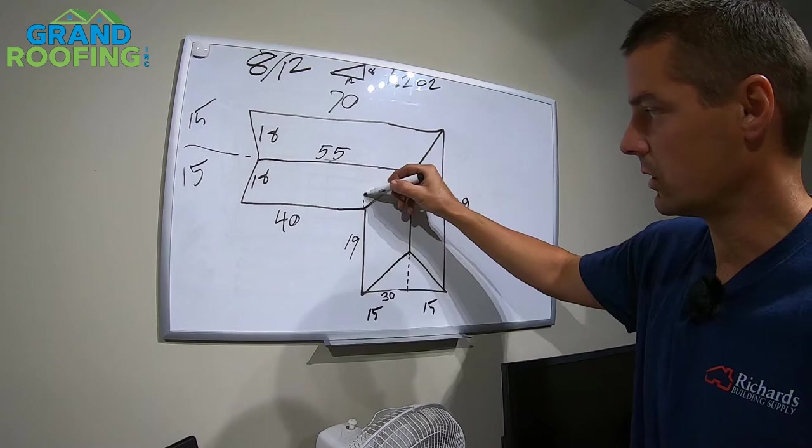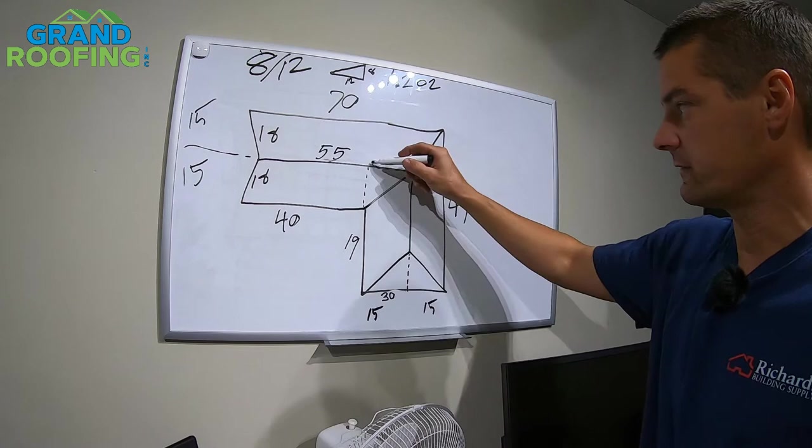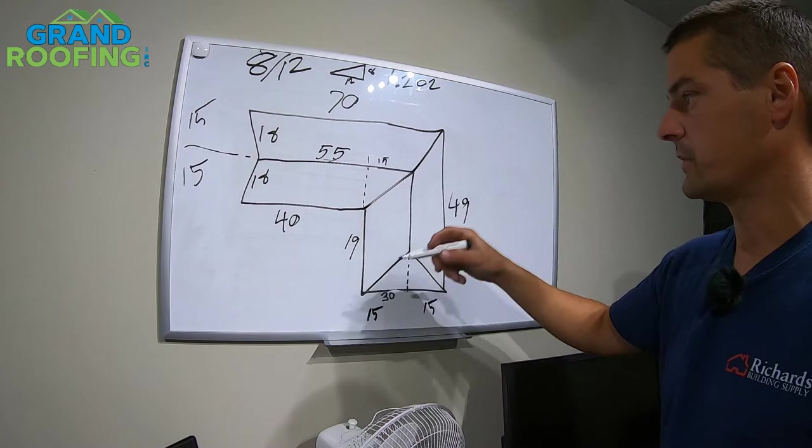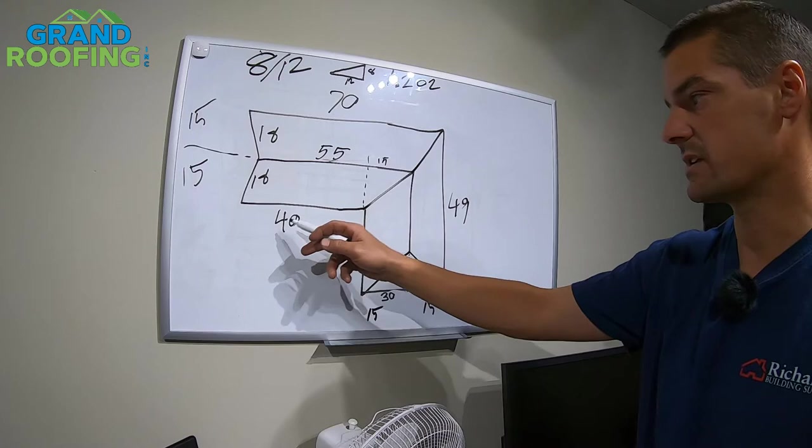This one's easy. It's 19 foot across and you know your height, so you take the height, 18 times 19. This one's a little different. If you were to essentially, again, draw a line on one side, you are now going to take half that distance. So if you've got 15 foot right here, take half of that number.